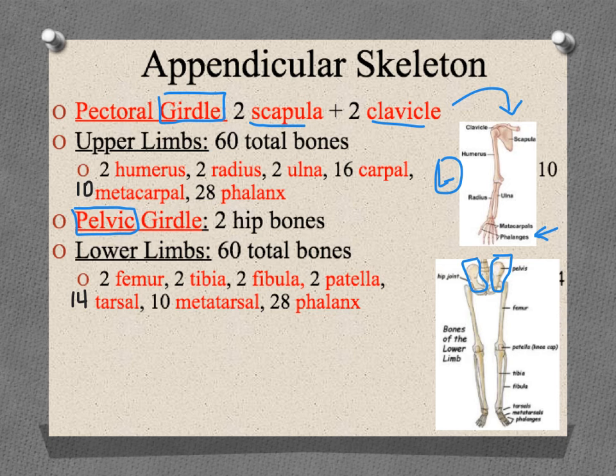We have a similar situation in the lower half of the body. The pelvic girdle comprises the structures that make up your hips and hold your legs to the body — two hip bones, one on each side. In the lower legs there are 60 bones total: two femurs, two tibias (the larger of the two lower leg bones), two fibulas, two patellae (kneecaps), 14 tarsals (7 per ankle), 10 metatarsals (5 foot bones per side), and 28 phalanges — 14 toe bones per side.